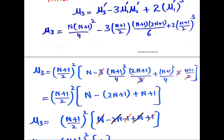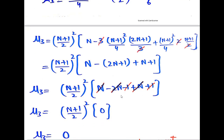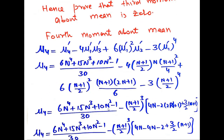When we also take this term common, we are left with (N+1)/3. Cutting the 3 with this term, and factorizing (n+1)²/4, we are left with (2n+1)/2. Taking (n+1)²/2 common outside the equation, we are left with N − 2(N+1) + (n+1), which after simplification equals 0. So μ₃, the third moment about the mean, is equal to 0.